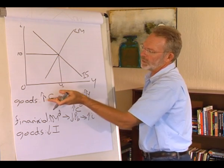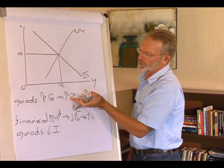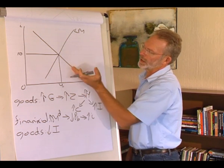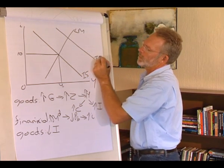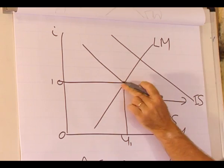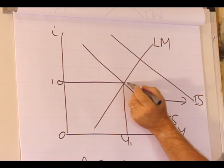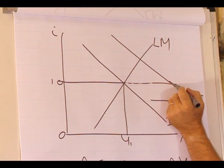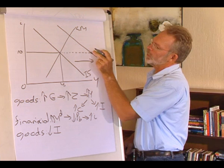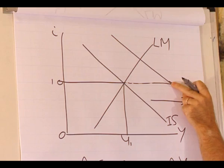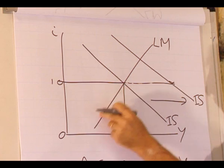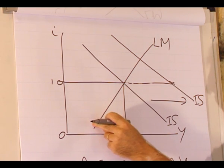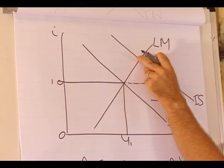Now we have an increase in government spending, leading to an increase in demand for goods and services, and the IS curve shifts to the right. Nothing happened to the interest rate, but the level of output increased to this new point. However, this point is not equilibrium.